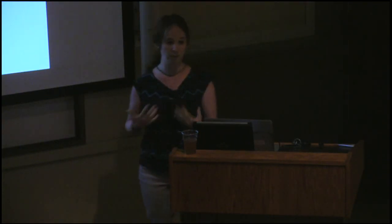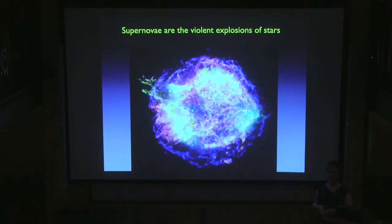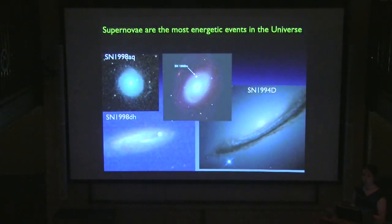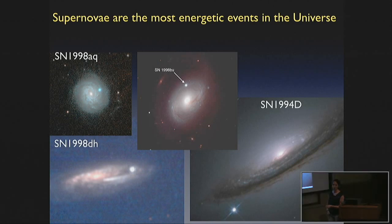Supernovae are the violent explosions at the ends of the lives of stars. When the explosion occurs, the star's material goes out into the interstellar medium at 10,000 kilometers a second, which is about 22 million miles per hour — very fast. We think that roughly 30 supernovae occur per second in the universe, so just in this talk there will be 100,000 supernovae occurring in the universe. Supernovae are the most energetic events in the universe, and as a consequence they're very easy to identify when we look at other galaxies. When we take images of other galaxies, we see these bright spots appear — those are where the supernovae are occurring.